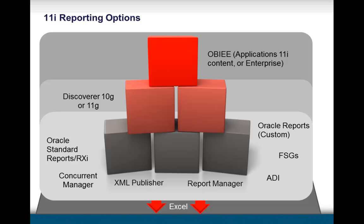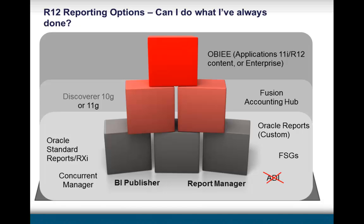Discoverer for 10g or 11g has always been the main ad hoc query tool. It consists of a tool for creating a report with an end-user layer to hide complexity. It's widely used in subledgers like payables, purchasing, and projects to get more detailed transactional information. And finally OBIEE — the Oracle Business Intelligence Enterprise Edition — came through Oracle's acquisition of Siebel. For those with the time, energy, and budget, OBIEE can provide dashboards and KPIs tracking the overall structure of your business, with different functional analytics packages available.